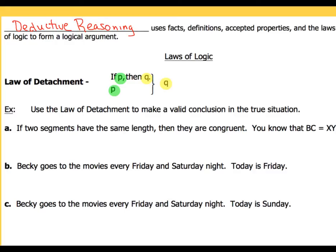In our first example, we've got this: if two segments are the same length, then they are congruent. You know that BC equals XY. So we're going to take a look at first identifying the hypothesis. It's pretty straightforward because we have the word IF as a clue. So 'if two segments have the same length' — that's going to be our hypothesis.